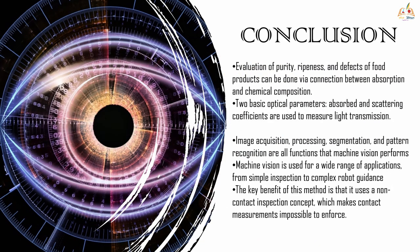Evaluation of purity, ripeness, and defects of food products can be done via the connection between absorption and chemical composition. Two basic optical parameters — absorption and scattering coefficients — are used to measure light transmission. Image acquisition, processing, segmentation, and pattern recognition are all functions that the machine performs.